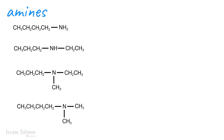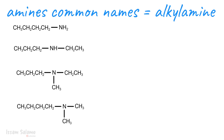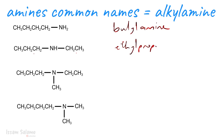Amines can have common names in the form of alkyl amine. For example, the first structure is going to be called butyl amine. In the second structure we have two alkyl groups — ethyl and propyl — and we name them in alphabetical order, so the name is ethyl propyl amine. For the third structure we have three alkyl groups: methyl, ethyl, and propyl, so the name is ethyl methyl propyl amine.